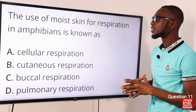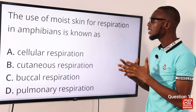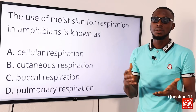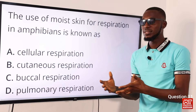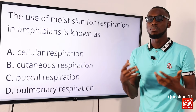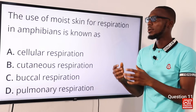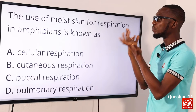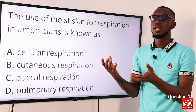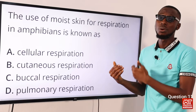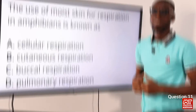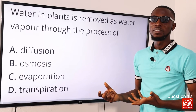Question eleven: the use of moist skin for respiration in amphibians is known as what? Amphibians — frogs and toads — can respire through the skin, the buccal cavity, and the lungs. When talking about using moist skin for respiration in amphibians, you're talking about cutaneous respiration or skin breathing. The correct option is option B.